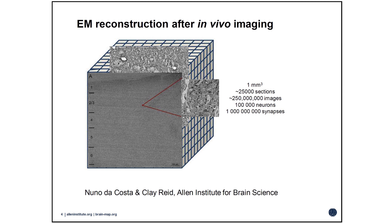This puts a few constraints on the experiments we're trying to do. Firstly, if it's a millimeter by a millimeter, we've got to be able to image all the way down to a millimeter below the peel surface. Secondly, if we're going to get the functional properties of every cell, then every cell in the volume needs to be labeled, so we're going to have very densely labeled tissue.